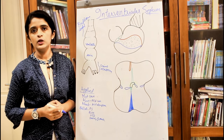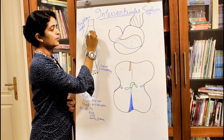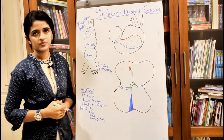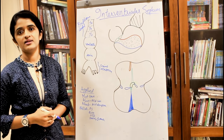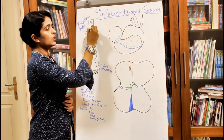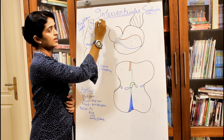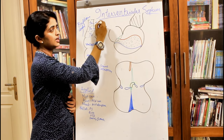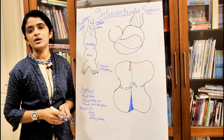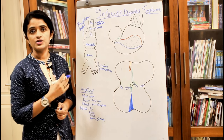The bulbus cordis is further divided into a proximal one-third, middle one-third, and distal one-third. The proximal one-third has no particular name. The middle one-third is known as the conus, and the distal one-third is known as the truncus arteriosus. The truncus arteriosus is the trunk giving rise to the pulmonary trunk and the aorta.